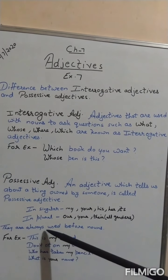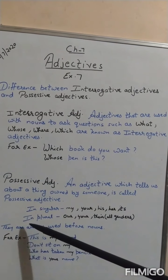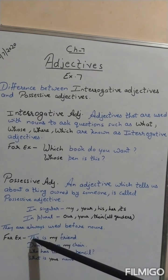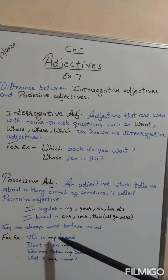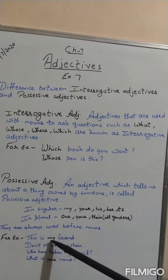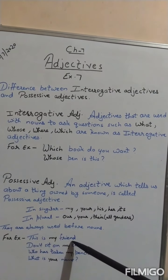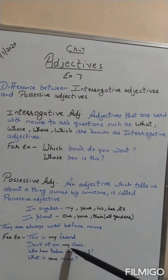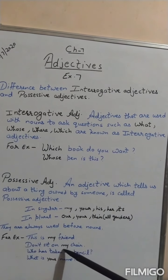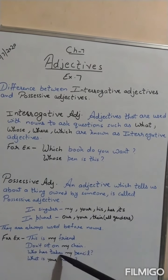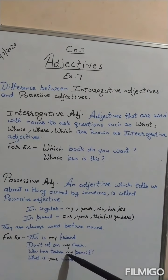When they are used before a noun, then it is known as a possessive adjective. For example, 'This is my friend.' Here, 'my' is the possessive adjective, and it comes before the noun 'friend'. Another example: 'Don't sit on my chair.' Here 'chair' is the noun and 'my' is the possessive adjective. 'Who has taken my pencil?' — 'pencil' is the noun and 'my' is the possessive adjective.